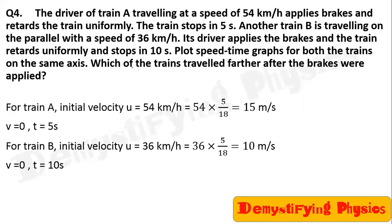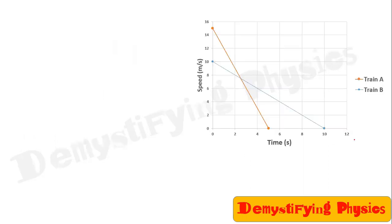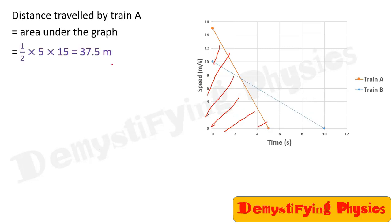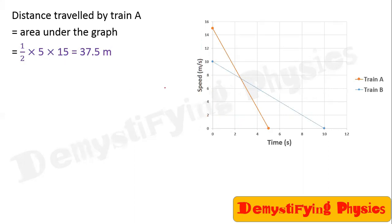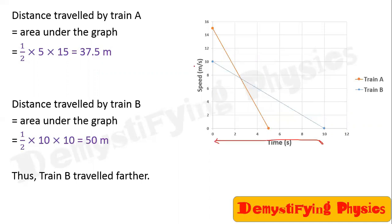Which of the trains traveled farther after the brakes were applied? Find the distance using the area under the graph. For train A, the area is a right triangle: half into base 5 into height 15, giving 37.5 meters. For train B: half into base 10 into height 10, giving 50 meters. So train B traveled farther.